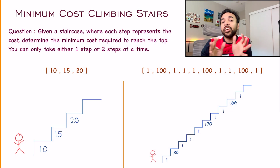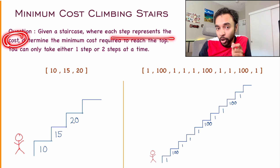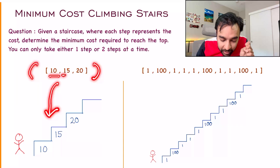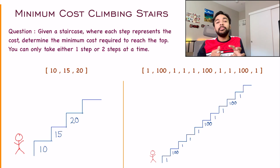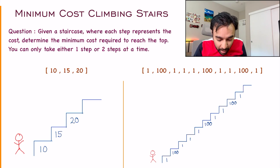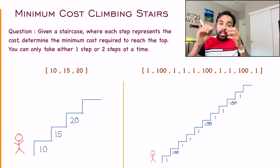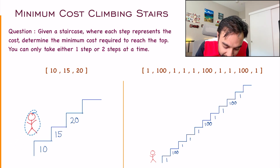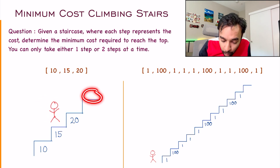We need to make sure that we are understanding the problem statement accurately. In this problem, you have a staircase where each step is representing some cost. I have an array over here representing my staircase, and all of these elements represent the cost of each step. Once you pay this cost, you can either move one step at a time or take a jump of two steps. You have to make sure that by paying the minimum cost, you can reach all the way up to the top. You are allowed to either start from step number one or step number two. The goal is to reach the very top.